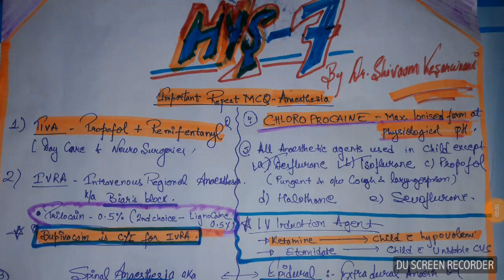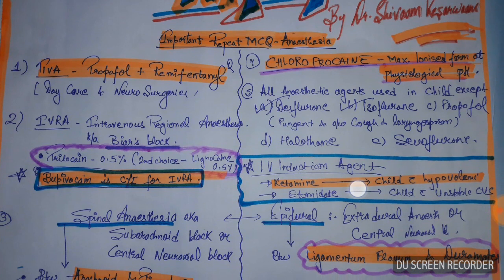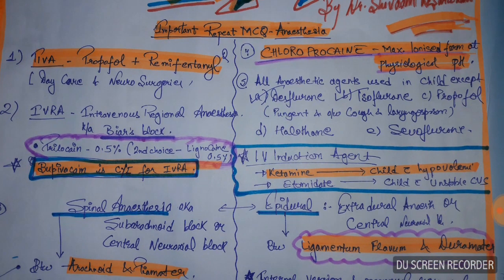Let's start with high-yielding stuff, part 7. Hello, this is Dr. Shivam Kisarwani. Starting this session, we will be having important repeat MCQs concentrated over anesthesia. Starting with TIVA — Total Intravenous Anesthesia — which constitutes propofol and remifentanil, mostly preferred for daycare and neurosurgery.